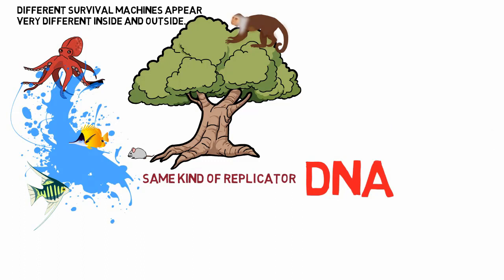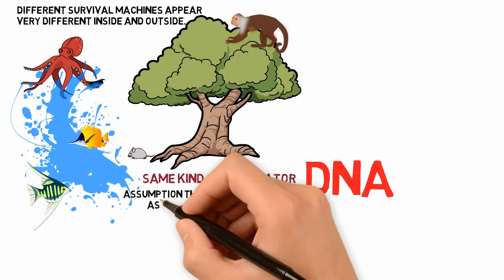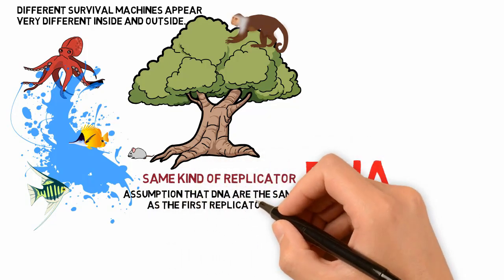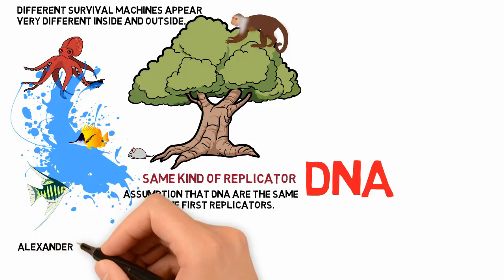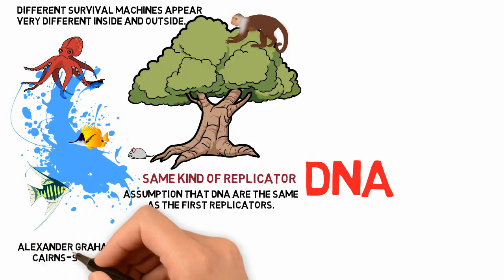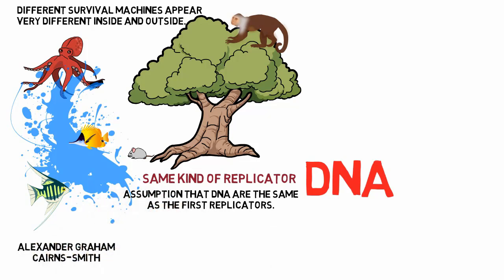In his discussion of DNA, Dawkins assumes that DNA is much the same as the first replicators in the primeval soup. Of course, they may be related, totally different, or their survival machines were taken over at a later stage by DNA. Alexander Graham Cairns-Smith has also hypothesized that the first replicators may have been inorganic crystals.